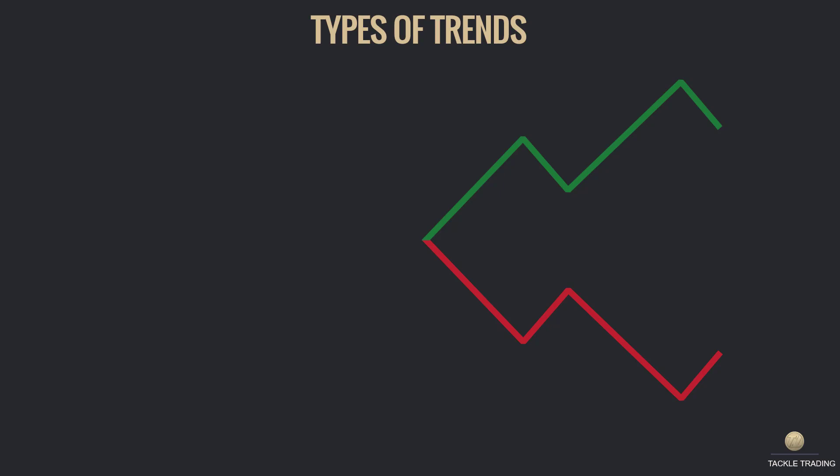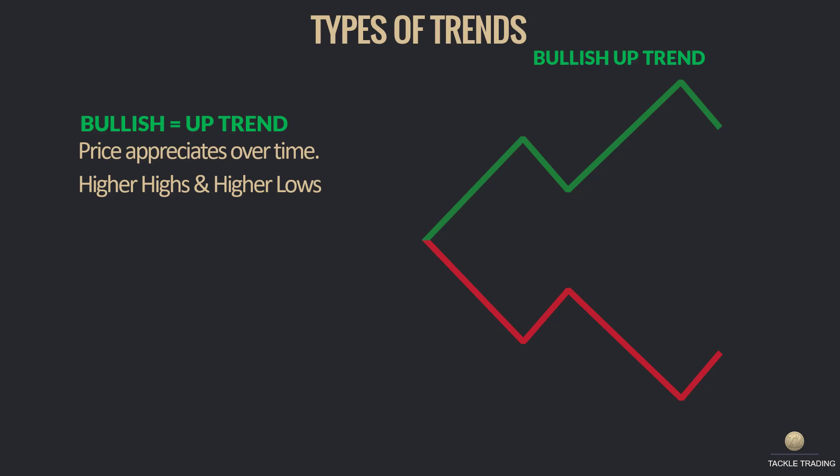The first type of trend is what we call a bullish uptrend. A bullish uptrend is price appreciating over time, and it creates a higher high, higher low — higher high, higher low.